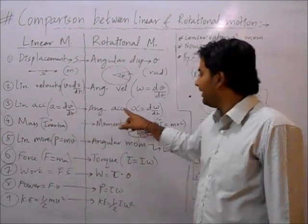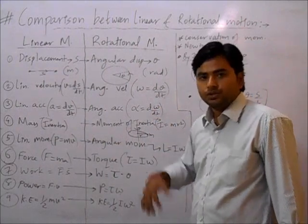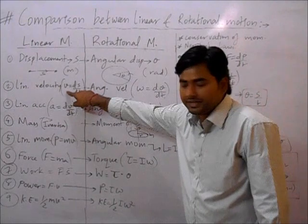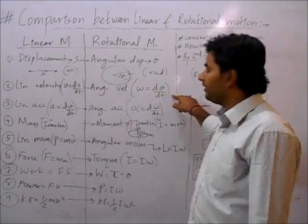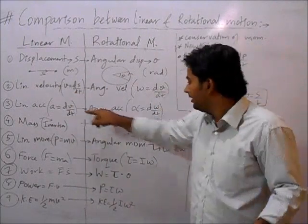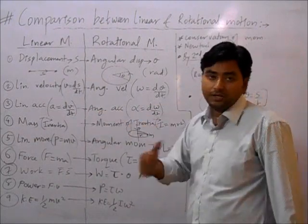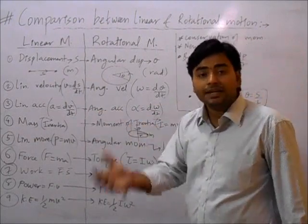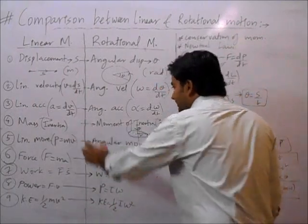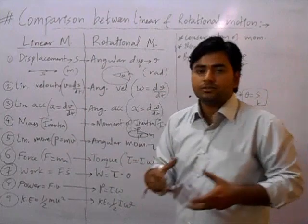For acceleration, the rate of change of velocity gives linear acceleration. Angular acceleration alpha = dω/dt. Units: linear velocity is meter per second; angular velocity is radian per second. Linear acceleration is meter per second squared; angular acceleration alpha is radian per second squared.